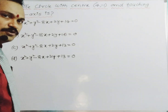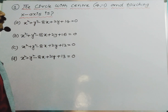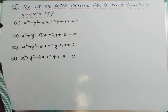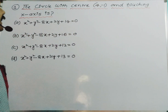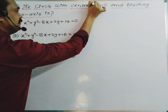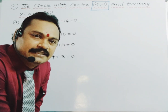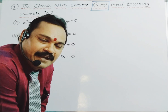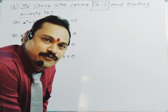What is our first question today? The circle with center (4, -1) and touching the x-axis. Center with coordinates (4, -1) and touching x-axis. Here the first important point is which option contains the center as (4, -1). Four options are provided — let's check which option contains center as (4, -1).